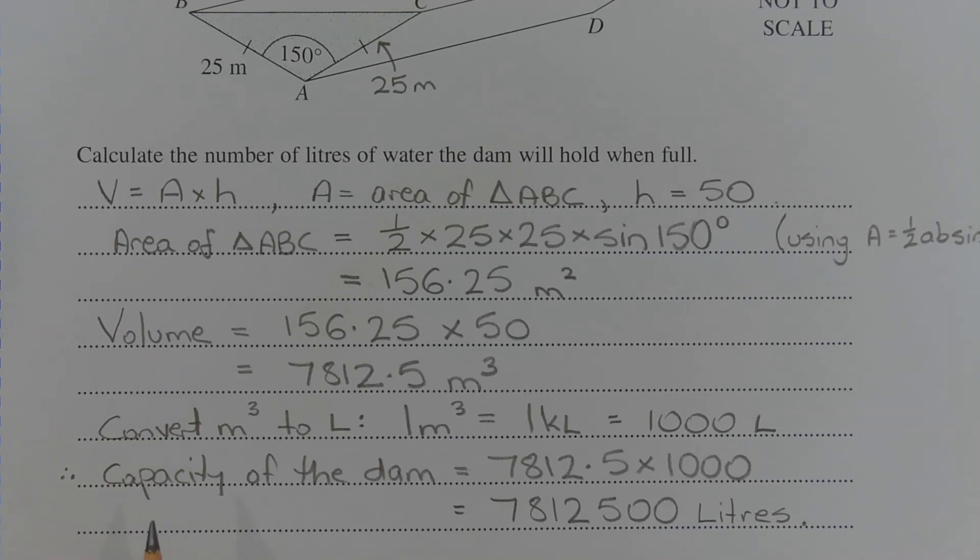The final step is to convert cubic metres to litres. And the conversion is one cubic metre is equal to one kilolitre, which equals 1000 litres. Therefore, the capacity of the dam is 7812.5 multiplied by 1000, which equals 7,812,500 litres.